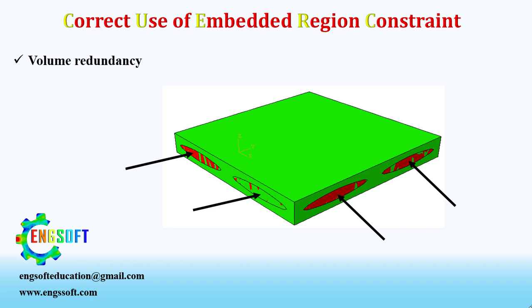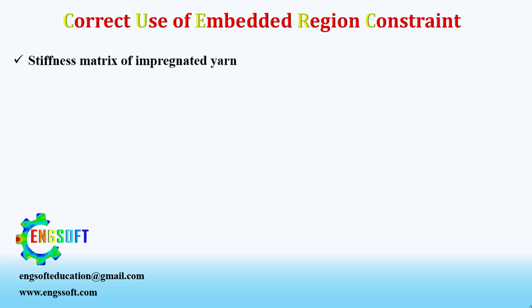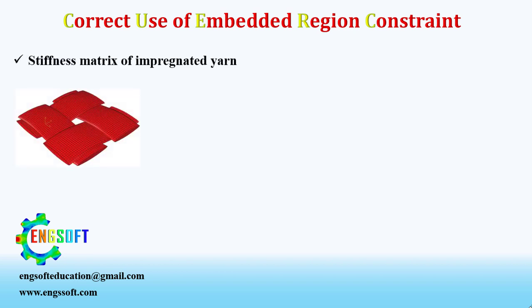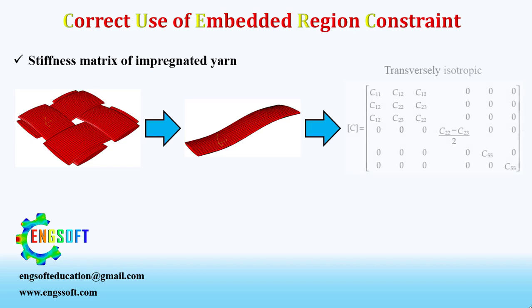To solve this issue, you must subtract the stiffness of the matrix part from the woven fabric part. For this, you first need to build the stiffness matrix of the woven fabric part. The woven fabric is made of four impregnated yarns, which are transversely isotropic materials, and their stiffness matrix takes the corresponding transversely isotropic form.